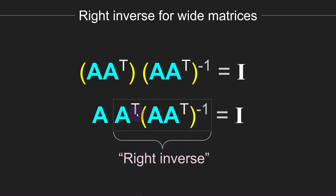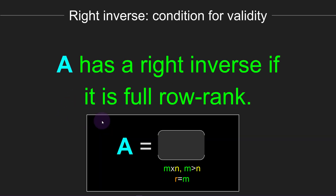We regroup the matrices, calling A one group and A transpose times (A A transpose) inverse as a separate group. We call this the right inverse — the matrix such that when you multiply it by A, it produces the identity matrix. I encourage you to put this expression on the left side of A, and you'll see the right inverse doesn't even produce a valid expression there. Similar to the left inverse, the right inverse exists only when matrix A is full row rank — when the rank equals m — so that A A transpose will have full rank.